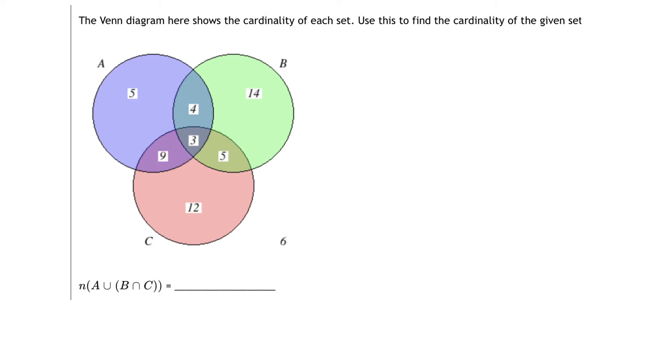So how might we proceed? Well, we're first going to start with the innermost element, which is B intersect C, and let's locate that in our Venn diagram.